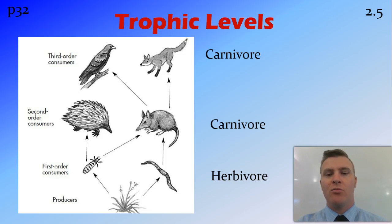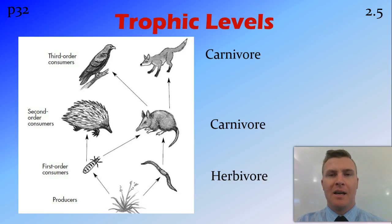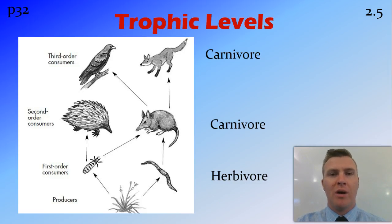We have a few more words to describe diet. Herbivores eat plants. Carnivores eat meat. And as you probably know, there are also omnivores, which eat a mixture of meat and plants.